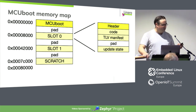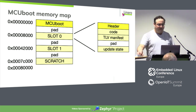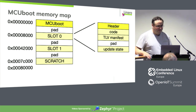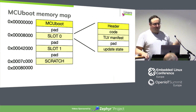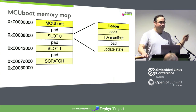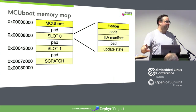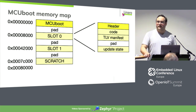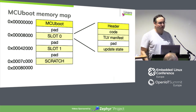The code region in slot zero starts with a header, some code, a manifest, and some update state. The executive summary is: when MCU boot starts running, it looks at slot zero — the header, code manifest, signatures — and uses that to make a decision: do we boot this, or has the code been compromised and is not valid? It also looks at slot one to decide if there's an upgrade available to put into slot zero for a new version of the firmware.